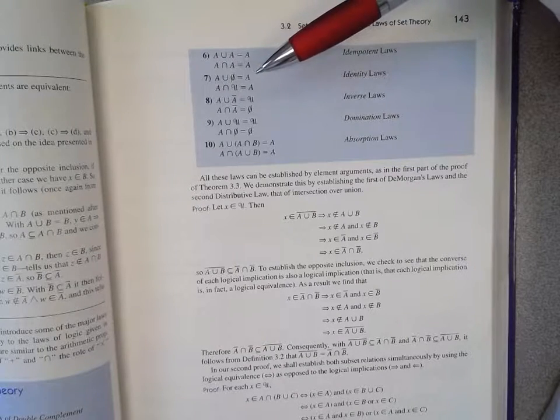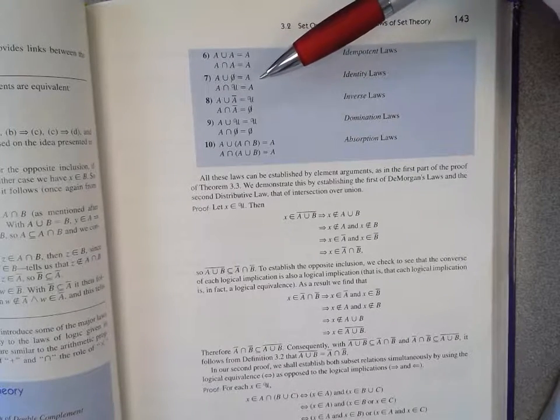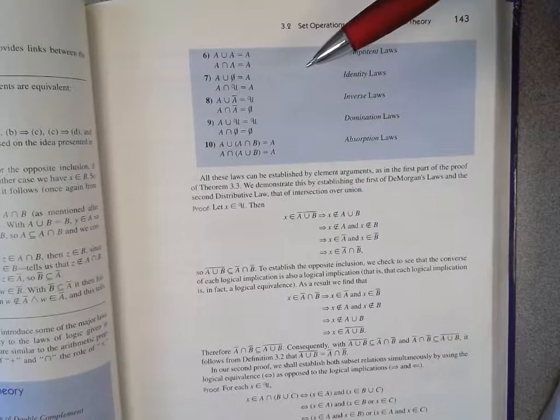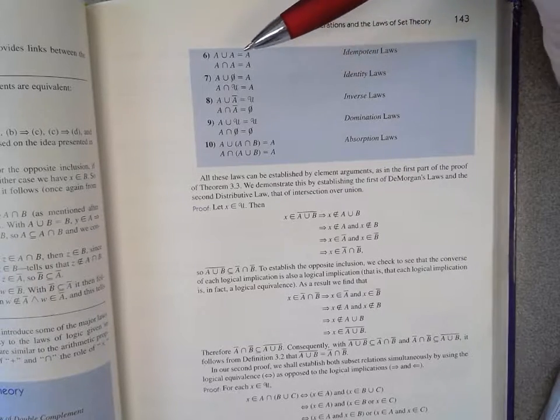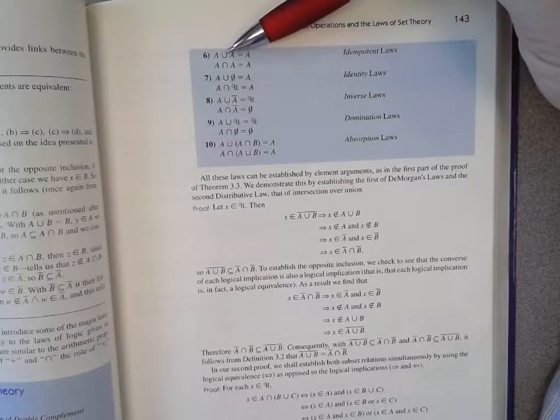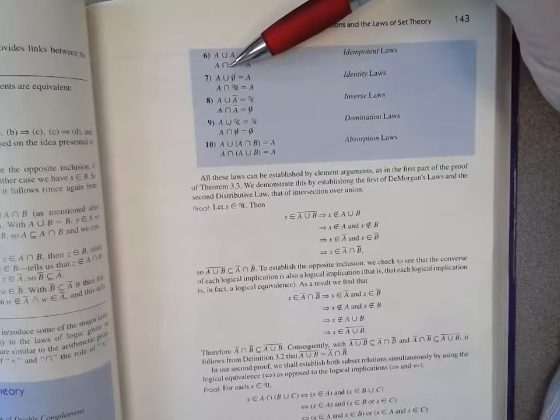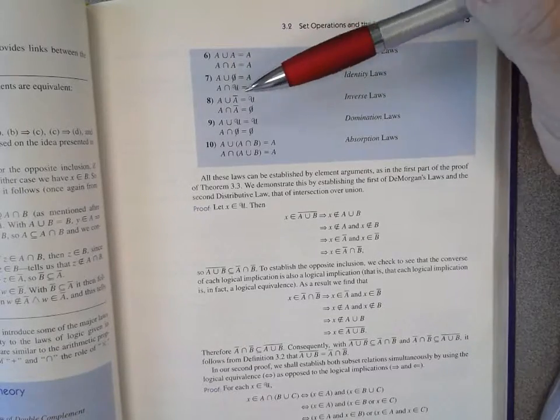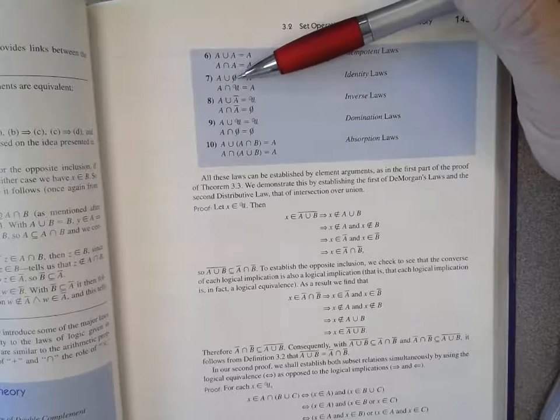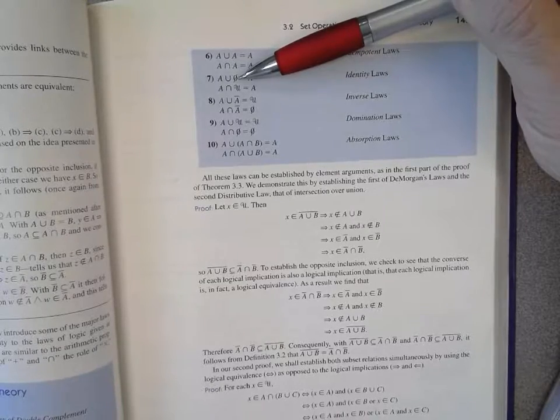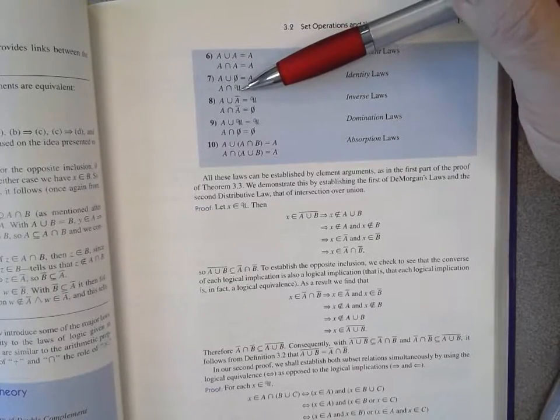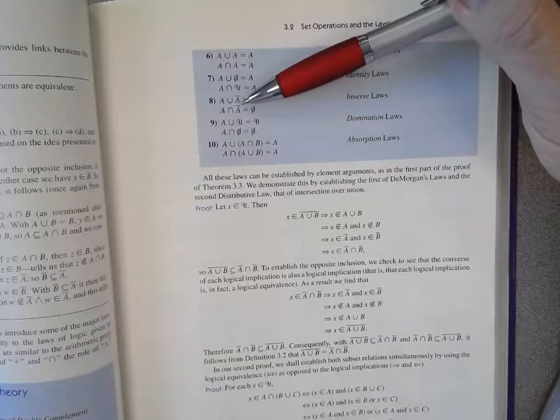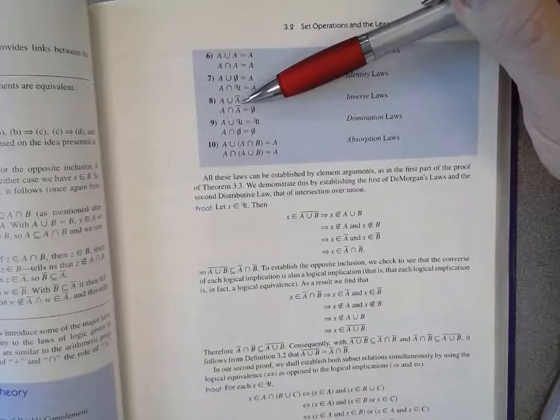These are the same laws that we saw when we were talking about logic. It's just that union is replacing or, intersection is replacing and. And the empty set is replacing the fallacy. The universal set is replacing tautology. Complement is replacing not.